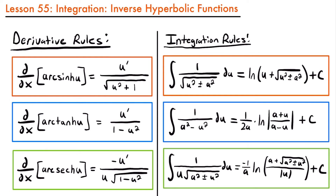Our second rule is that the integral of 1 divided by a squared minus u squared du equals 1 divided by 2a times the natural log of the absolute value of a plus u divided by a minus u, plus c. Our third integration rule is that the integral of 1 divided by u times the square root of a squared plus or minus u squared du equals negative 1 divided by a times the natural log of a plus the square root of a squared plus or minus u squared divided by the absolute value of u, plus c. The plus or minus signs in this third rule correspond to each other as well.